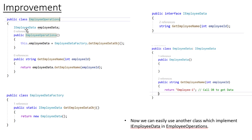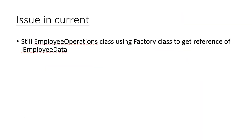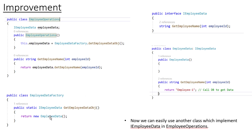The benefit of returning IEmployeeData is that currently it returns a new EmployeeData, but if another class comes along — say AnotherEmployeeData — we can easily swap it without updating multiple places in the code. That's how we improved things using the IOC and DIP principles. If you want to know more, please see the previous video. Now let's talk about how we can further improve the code via the dependency injection pattern. The issue in the current code is that we are still getting the object using the DataFactory.